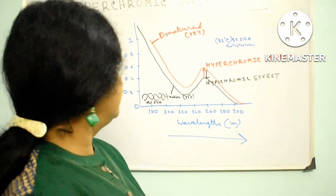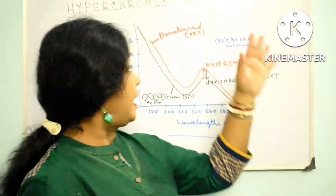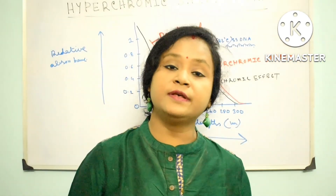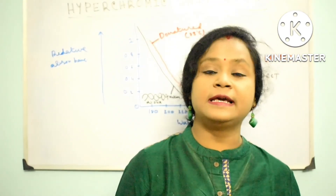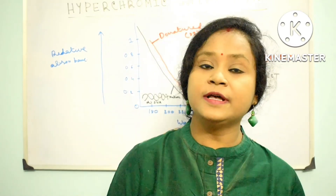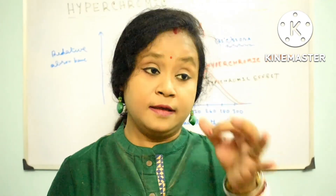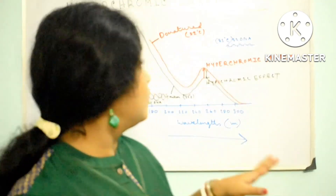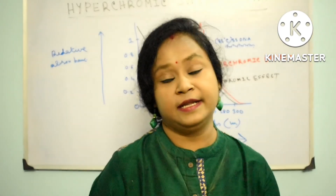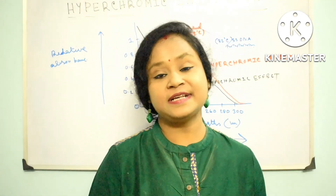Got it? This is in detail — hypo and hyperchromic shift of DNA along with melting temperature, quantification of nucleic acids, and stability. All are related. Without discussing all these things together, one cannot properly understand what is actually hypochromic and hyperchromic shift of DNA. So stay tuned and wait for my next lectures about RNA. Thank you.